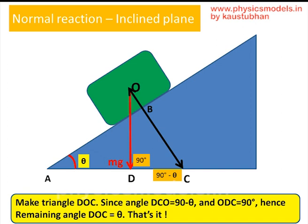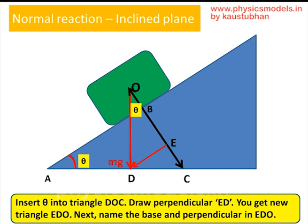After that, plug in a point D so that DOC becomes a new triangle. The angle at C is already 90 minus theta, and the angle at D is 90 degrees because mg is perpendicular. Therefore, the angle at O should be theta by inference, and the total angle will be 180 degrees for that triangle. So this is the most important thing — we have derived theta. The rest is pretty easy.